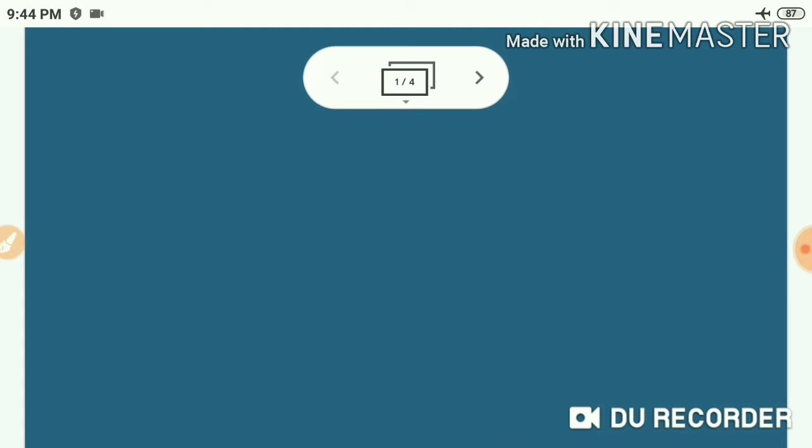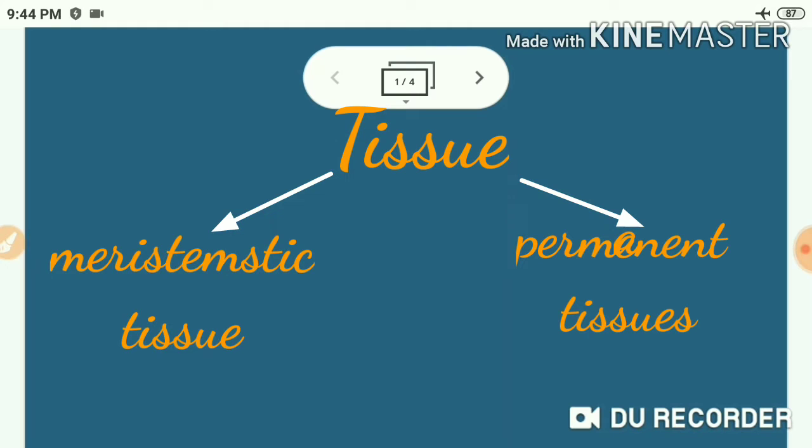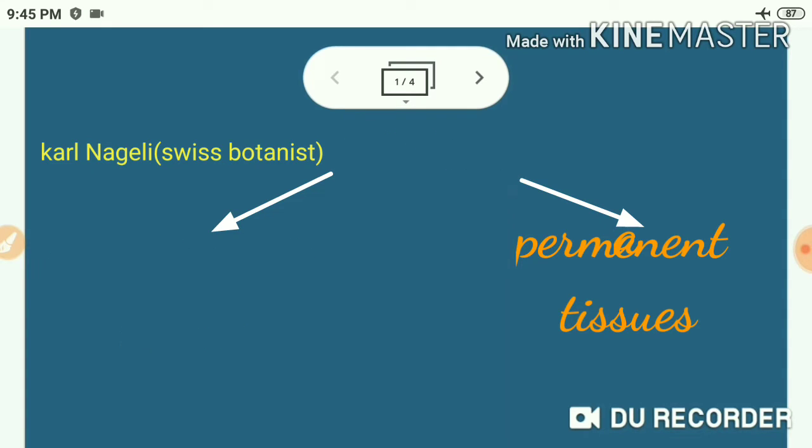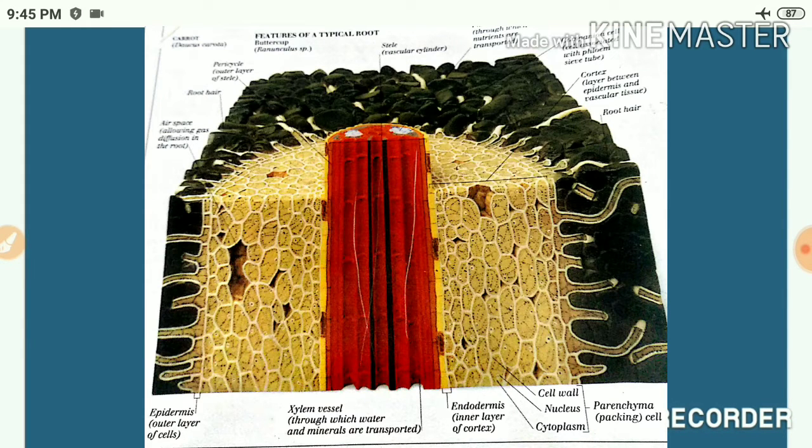The tissues of a vascular plant are classified into two on the basis of their capacity of division by Carl Nageli. Carl Nageli was a Swiss botanist. He classified tissues of vascular plants into two. They are meristematic tissues and permanent tissues. Vascular plants are nothing but higher plants. That is, they have vascular tissues like xylem and phloem for the conduction of water and minerals as well as food prepared in the leaves. Just like the blood vascular system of higher animals. The classification is meristematic tissues and permanent tissues.